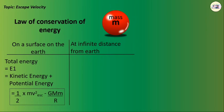For an object of mass m at infinite distance from the earth, total energy E2 equals kinetic energy plus potential energy, which is zero.